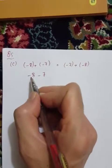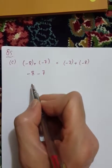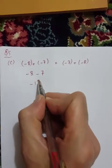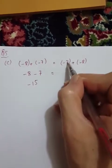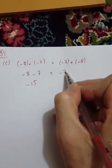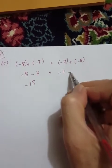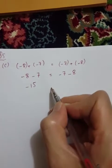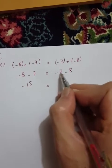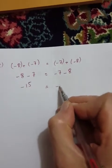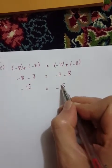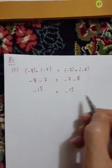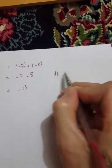After simplifying: minus seven plus multiply minus minus eight. After that, simplify again. Now moving to part d.